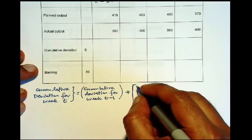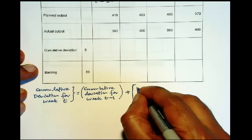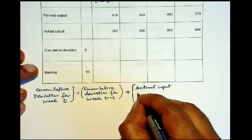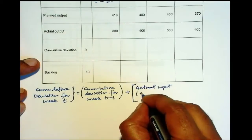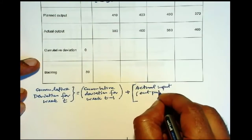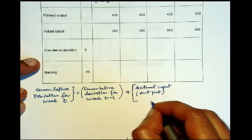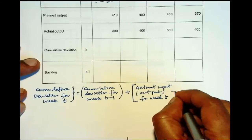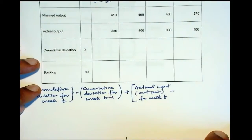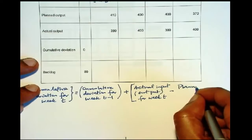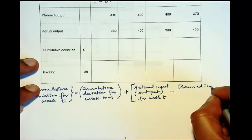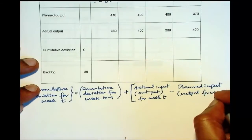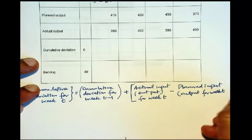Then to that you add the actual input or output. So we are going to be doing this for output also. For week T, for week T minus planned input or output for week T.